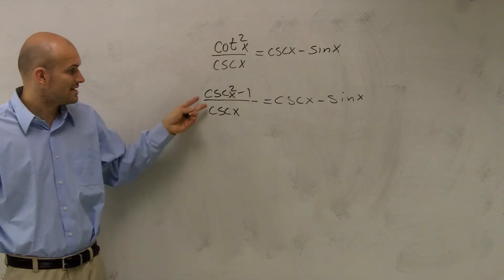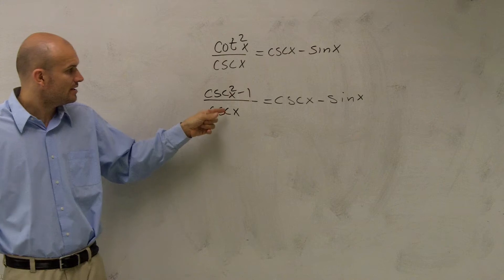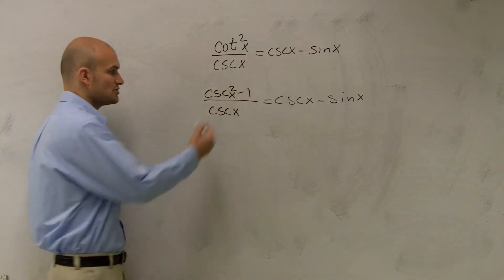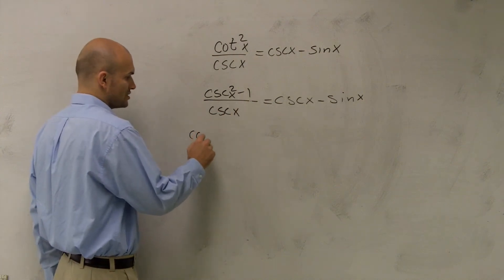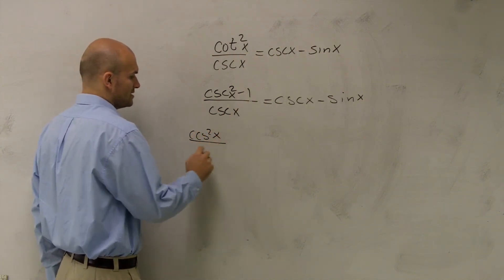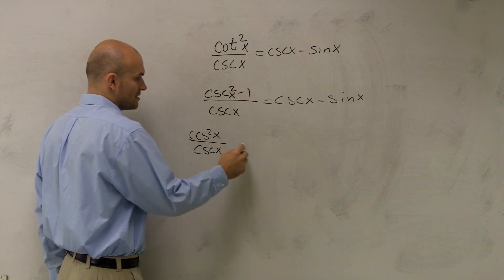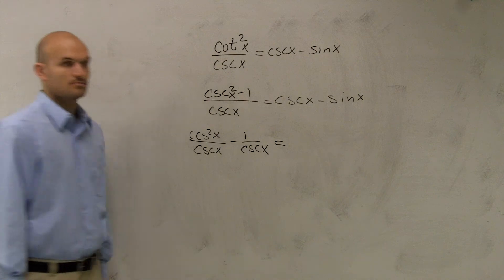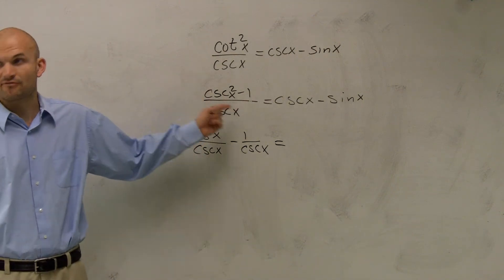Now, the next thing I can do, guys, is remember, when you have a number that's being divided into them, you can divide your cosecant into both of your terms. So I could rewrite this as csc²x/cscx minus 1/csc²x, right? All I did was I split up my fraction.